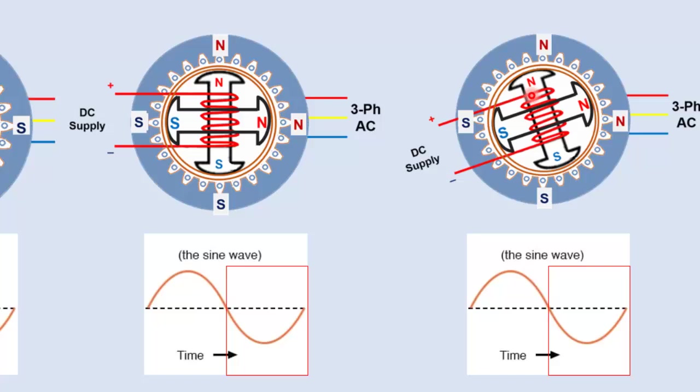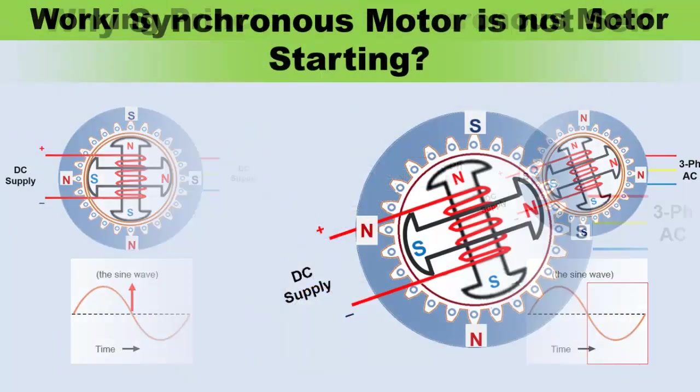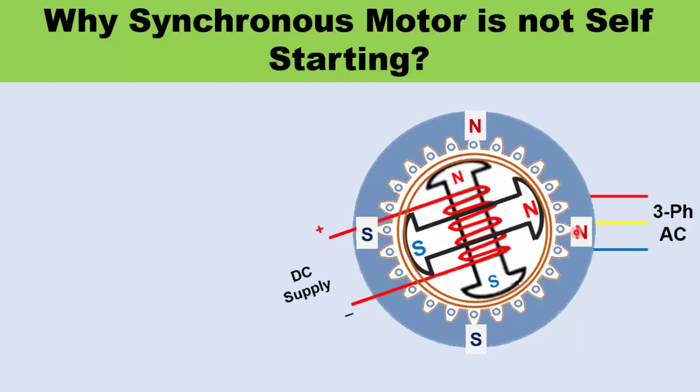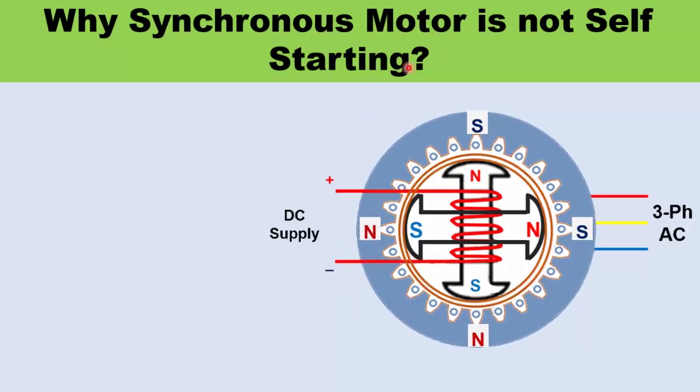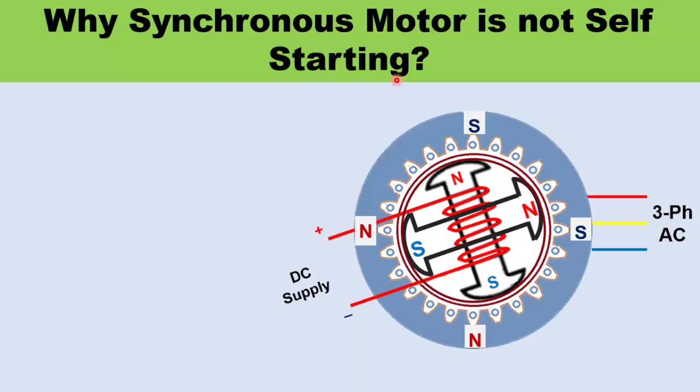In the next positive cycle the motor rotates in forward direction. Now at this point, you can easily understand why synchronous motor is not self-starting motor.